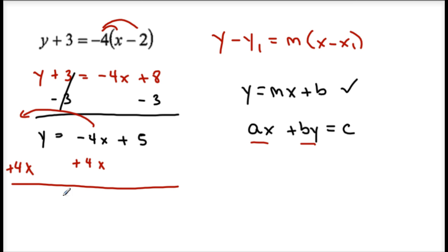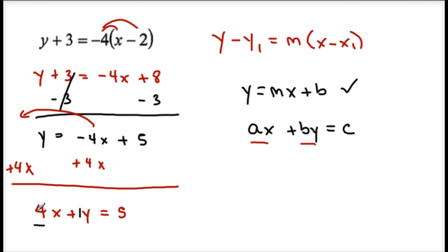I'm going to write my x term first: 4x. The coefficient of y is positive 1, so plus y equals 5. Now both x and y terms are on the same side. The first coefficient should be positive — yes. And all coefficients should be integers with no fractions. That is my standard form.